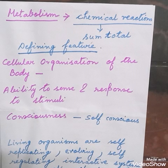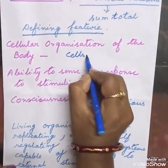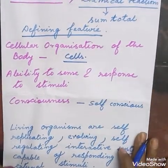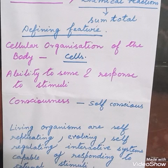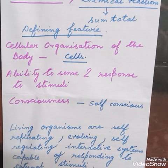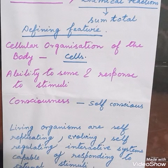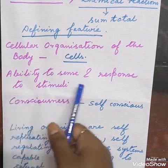Next is the cellular organization of the body. This is also very important — all living organisms are made up of cells. Cell is the structural and functional unit of life. So cellular organization of the body is one of the defining characteristic features of living organisms.